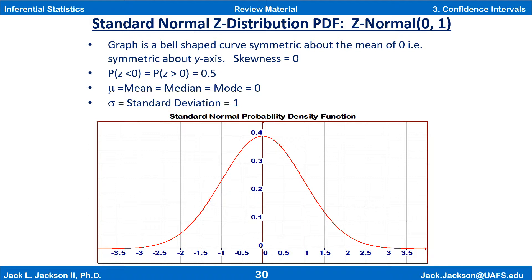The standard normal distribution is sometimes known as the z-distribution, since it is the distribution of z-scores from any normal distribution. It has a mean of 0 and a standard deviation of 1. Its PDF is a bell-shaped curve symmetric about the y-axis, so its skewness is 0. The probability that z is less than 0 is one half, and the probability that z is greater than 0 is also one half. The mean, median, and mode are all 0, and the standard deviation is 1.